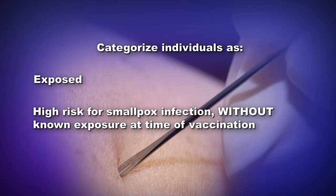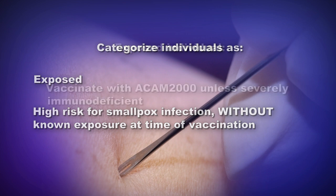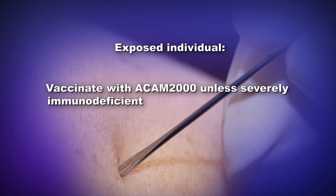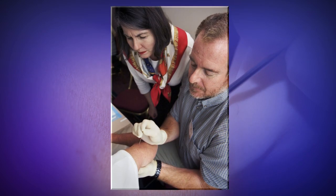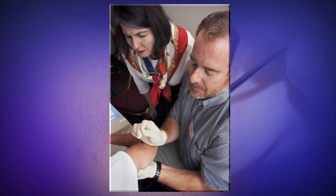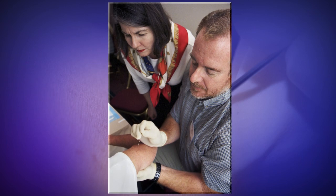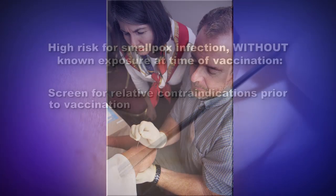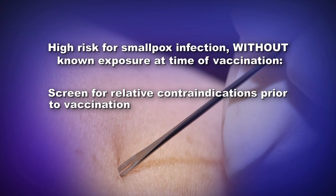Individuals can be categorized into those exposed to the smallpox virus and those who are at high risk for smallpox infection but without a known exposure at the time of vaccination. Individuals exposed to smallpox, including those with relative contraindications, should be vaccinated with ACAM2000 unless they are severely immunodeficient. However, individuals at high risk for smallpox infection without a known exposure to smallpox virus should be screened for relative contraindications to smallpox vaccination prior to administration of vaccine.